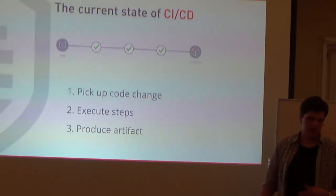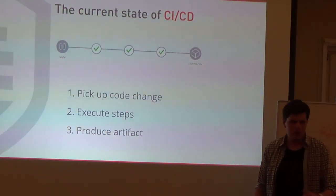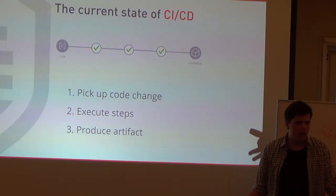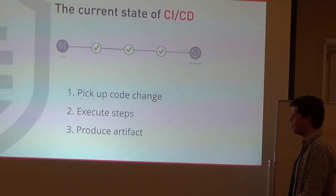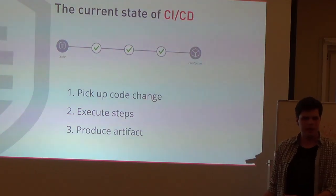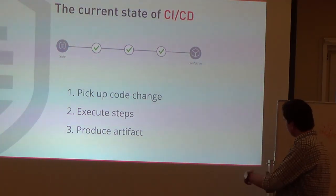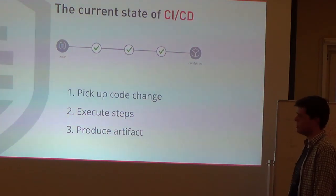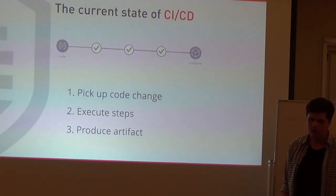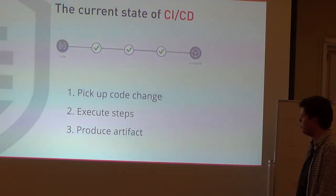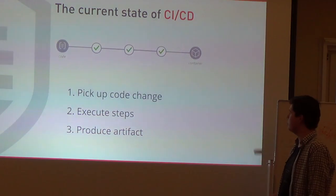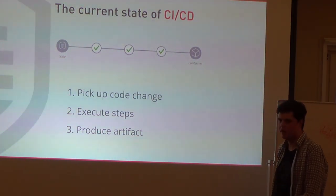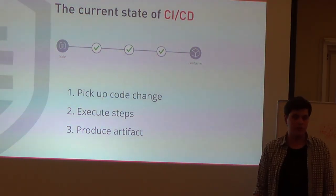So, the current state of CI and CD. In 2016 it should be relatively straightforward: your CI server picks up code changes and executes any arbitrary amount of steps and then produces an artifact. Let's apply this paradigm to a containerized world. It picks up the code change - that seems relatively unchanged, your CI server should still do that. Then it should execute any amount of steps to produce an artifact, which in this case should be a container - this is the unit of work that we want to deploy.